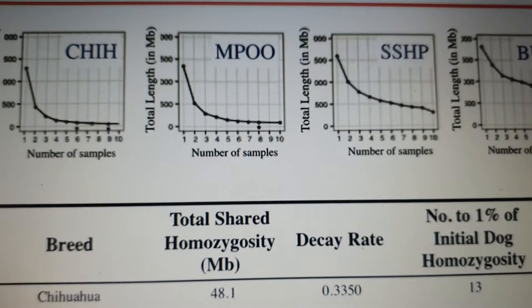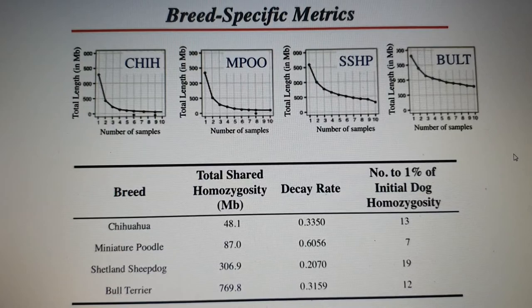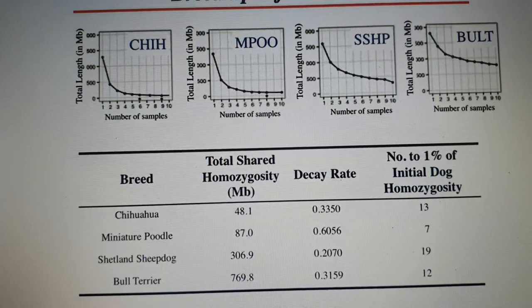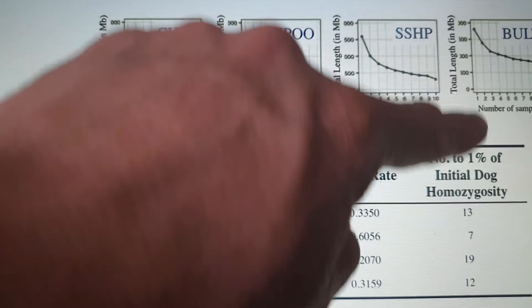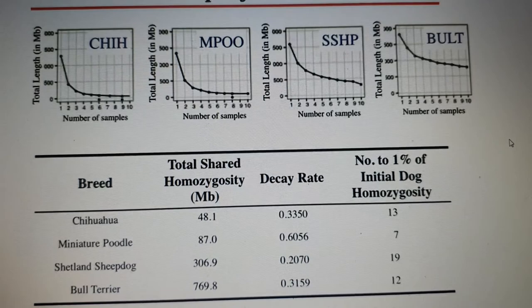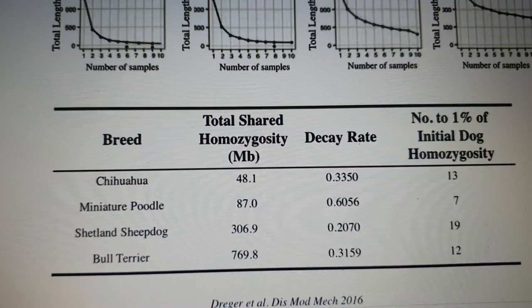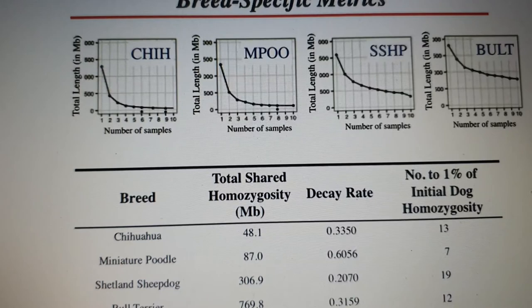This slide gives insight into breed-specific metrics and includes the Bull Terrier. It shows the number of samples needed to provide good insight into homozygosity — specifically, the total length of homozygosity and how many samples you need to capture one percent of initial dog homozygosity.